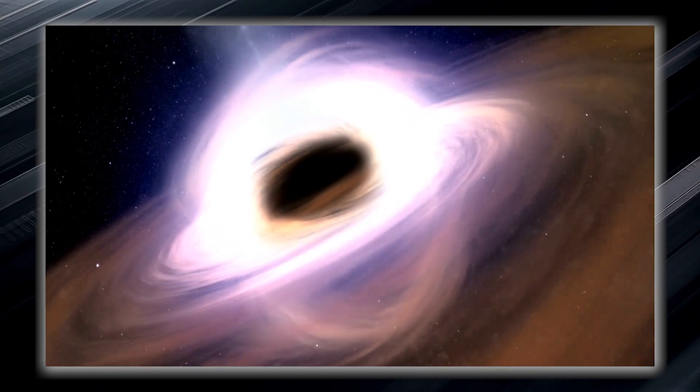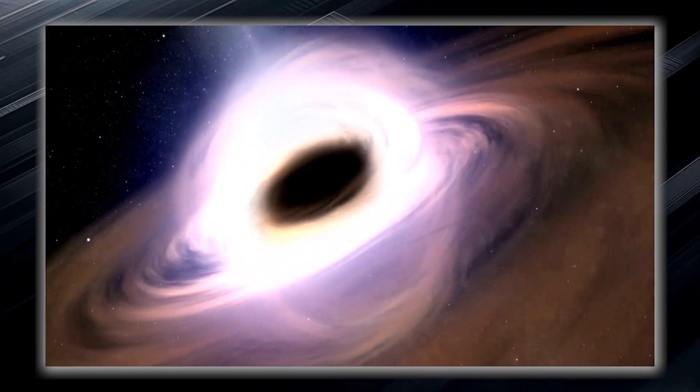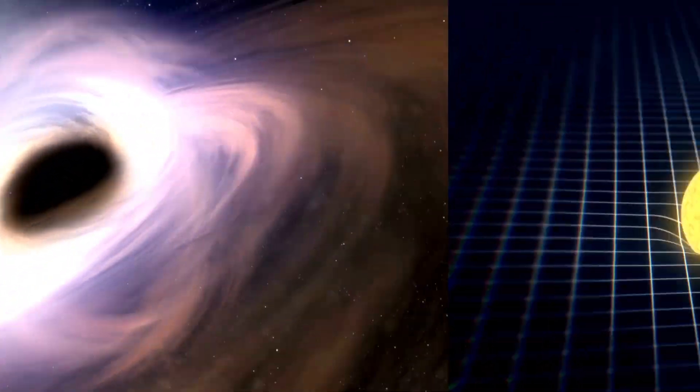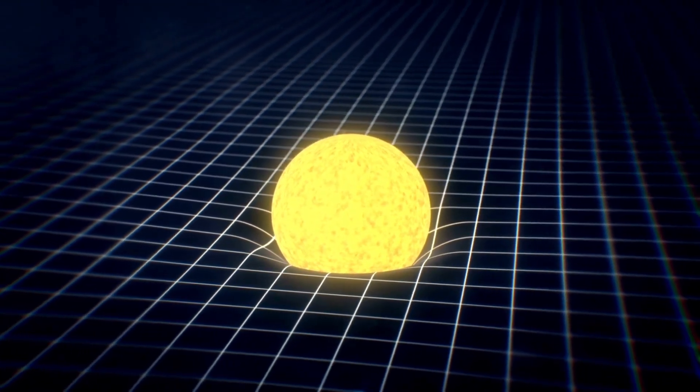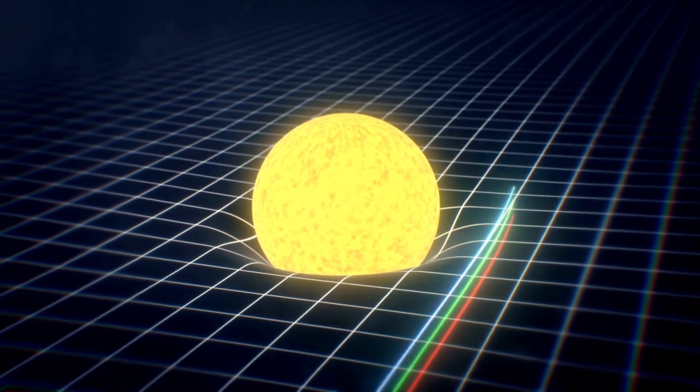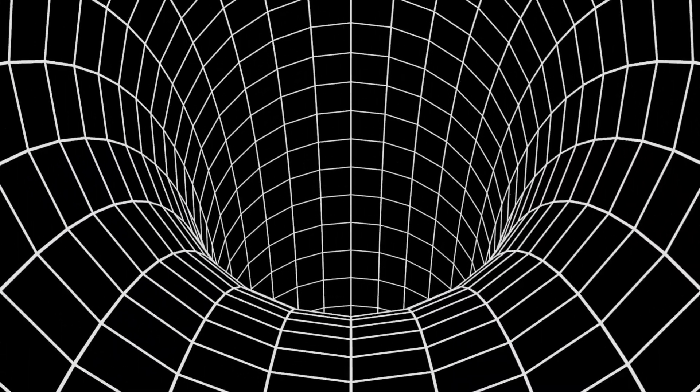Gravity does not behave like a conventional force, such as magnetism or pull and push, but is the result of the curvature of space and time. That is, gravity arises from how objects with mass and energy warp or bend the fabric of space and time.